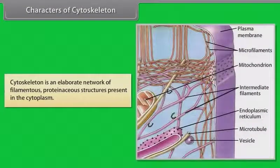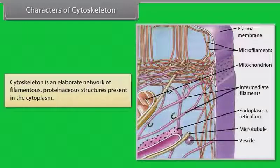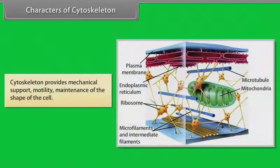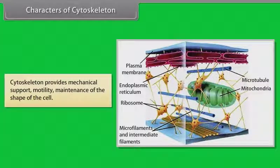Characters of cytoskeleton. Cytoskeleton is an elaborate network of filamentous, proteinaceous structures present in the cytoplasm. Cytoskeleton provides mechanical support, motility, and maintenance of the shape of the cell.